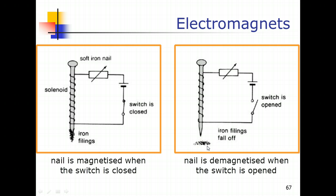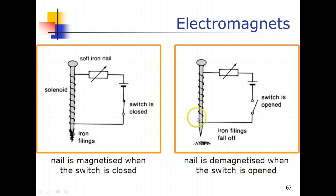A possible application of this simple circuit is at a garbage yard or waste collection area, where a much larger version of this circuit is used to separate iron materials from the rest of the collected rubbish.